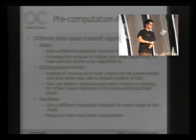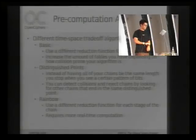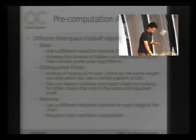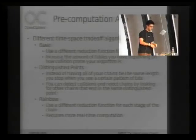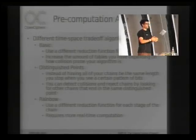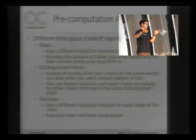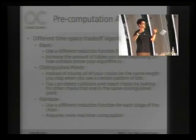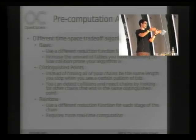The main method people use nowadays is rainbow tables. Rainbow tables use a different reduction function for each link in the chain. The only way for actual merges to occur is for the index inside the chain to be exactly the same. The only problem is it requires a lot more real-time computation because you have to compute every possible resulting chain from a given value.